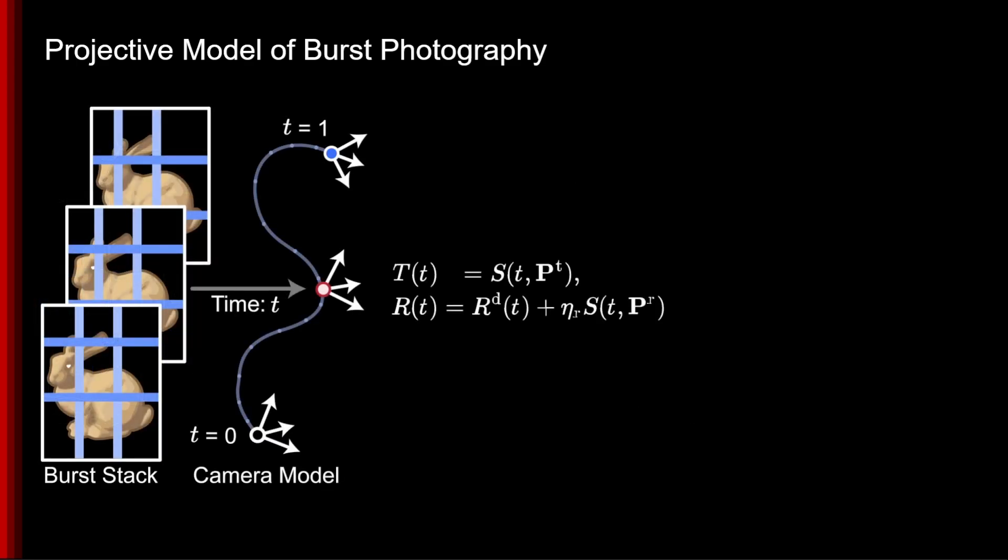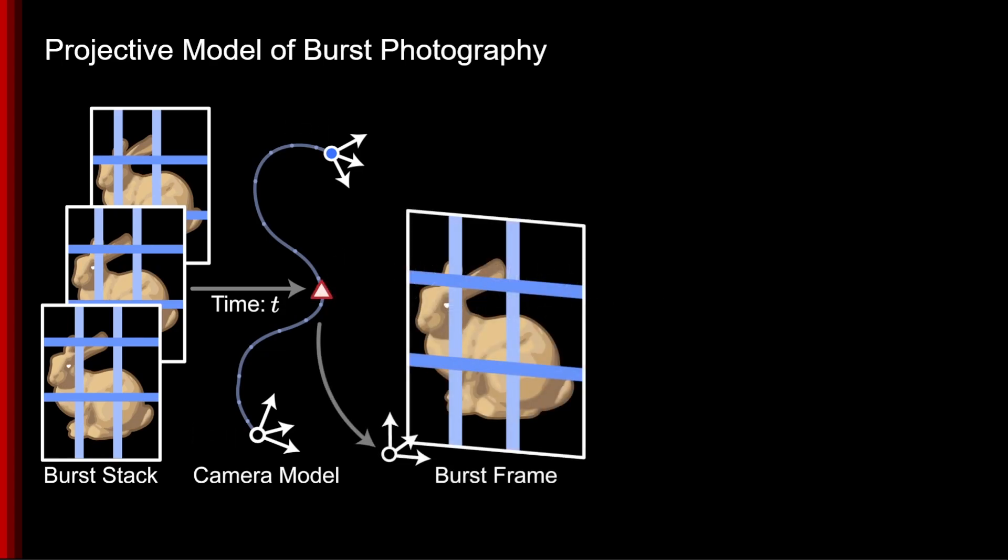Starting with a stack of slightly misaligned images, we model camera translations and rotations for these frames as two smooth cubic splines in 3D space. Applying this camera pose to our frame from time t, we sample a point in the image and randomly generate a 3D ray.